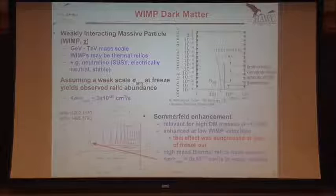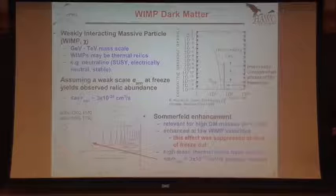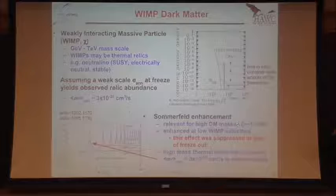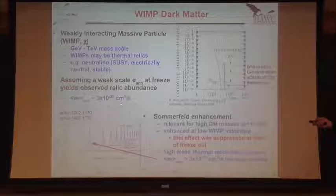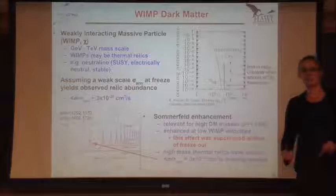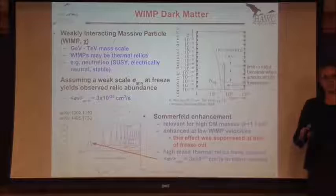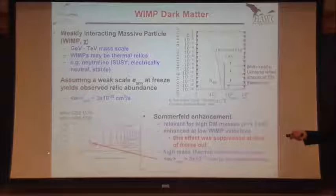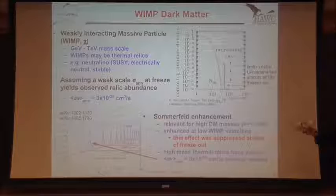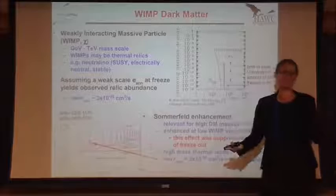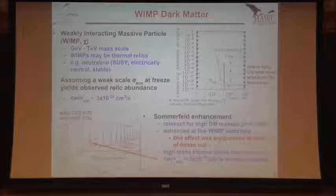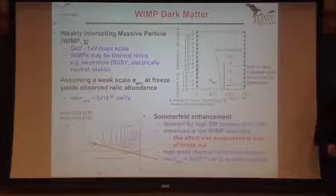If you think beyond WIMPs, an interesting example from the theoretical community is Sommerfeld enhancement for really heavy dark matter masses — above a TeV. The dark matter has this attractive force through W and Z bosons, which enhances the cross-section for annihilation at slow velocities. Dark matter today is non-relativistic — that's how it forms halos — but in the early universe it wasn't. So at the early universe you had a lower cross-section giving you the WIMP miracle, but today things are moving slower, so you can get these enhancements. Depending on the dark matter mass, we might get lucky and have a higher cross-section, which means easier to detect.